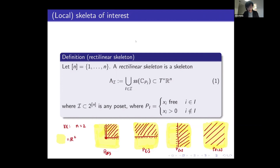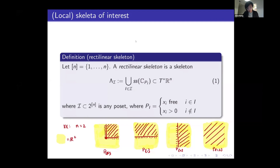If you just take the empty set alone, none of the two coordinates will be free, and you're requiring everything to be positive — so we're looking at the positive quadrant, and the singular support of that is going to be the exterior conormal of this closed cone. We can also take the set to be just {1}, or {2}, or {1,2}. P_{1} is just the upper half plane, P_{2} is the right half plane, and P_{1,2} is the entire R^2. So we're taking combinations of this type of skeletons.